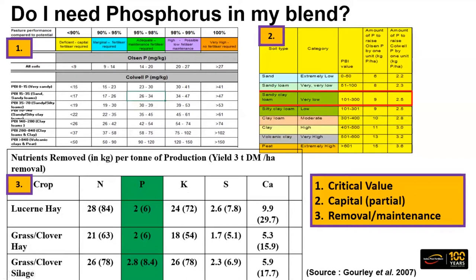This table shows how many kilograms of nutrients are removed per tonne of dry matter for a grass-clover hay or silage cut, with the numbers in brackets representing removal for a three-tonne yield. For phosphorus at three tonnes yield, we're removing 6 kilos of P. If our Olsen P values are in the satisfactory zone, our strategy may be to put out a blend that satisfies the replacement of phosphorus being removed in that hay or silage cut.